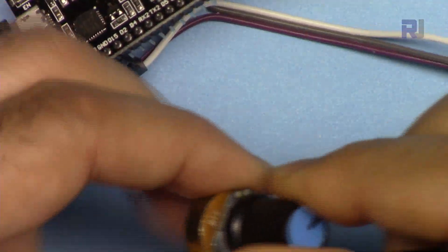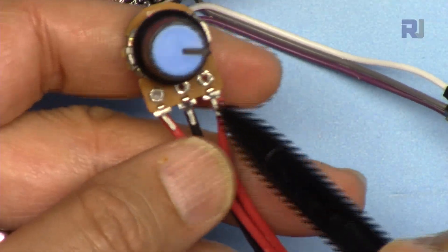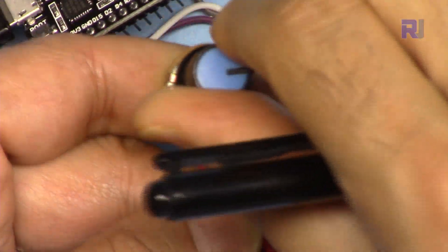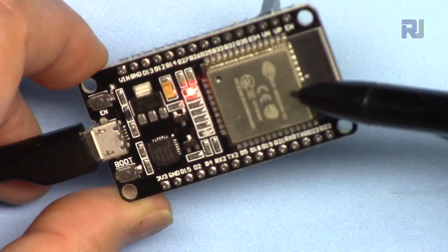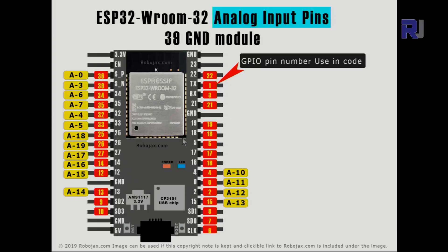I'm going to rotate this potentiometer so we can get the voltage between 0 to 3.3 volts as we rotate this, and this will measure it for us and I will display it on the serial monitor.